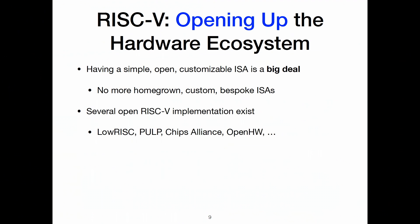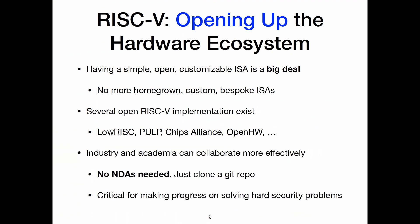We're seeing a lot of open hardware implementations now — we heard about the low-RISC, PULP, Chips Alliance, and the open hardware group. So you're starting to see a number of open RISC-V implementations. By having this open ISA and these open hardware implementations, industry and academia can collaborate more effectively. You don't need any NDAs — you just need to clone a Git repo. And we can all work together collectively in solving these problems. I think this is critical for making progress on hard security problems. Things like Spectre and Meltdown won't be solved by one company; we as an industry need to work together.